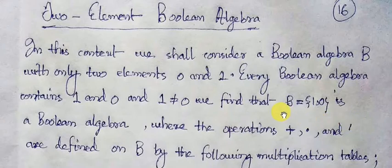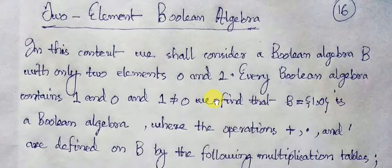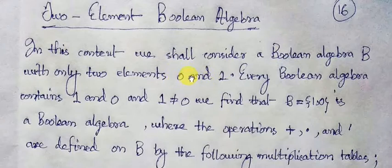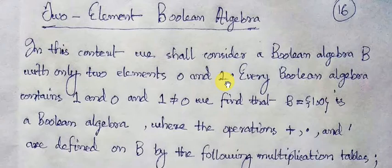In our present day context, we shall constrain ourselves to consider this non-empty set B merely consisting of two elements: one is 0 and another is 1. We all know that 0 is the additive identity element in a Boolean algebra, and 1 is the multiplicative identity element. Of course, this multiplicative identity element and the additive identity element are two distinct members.